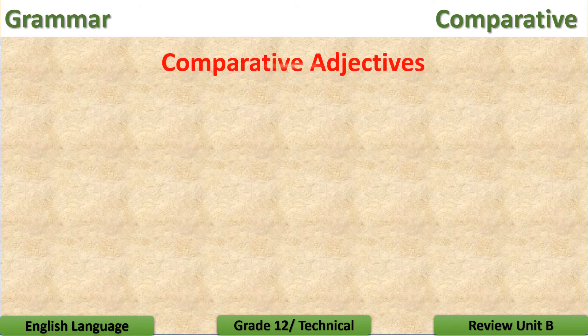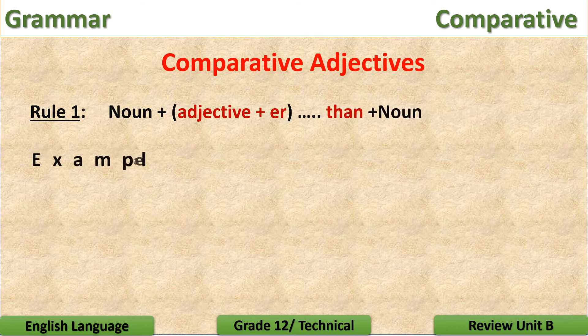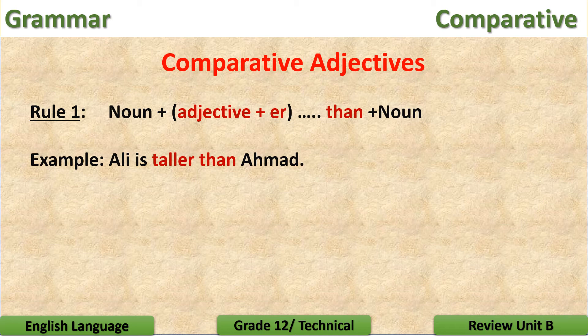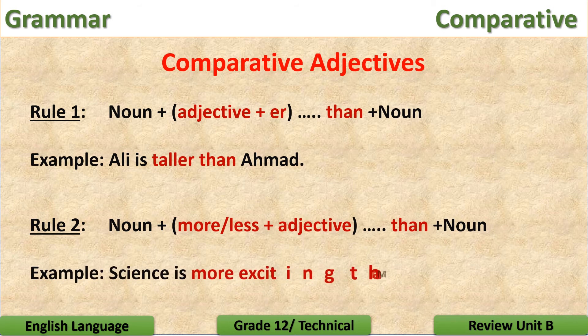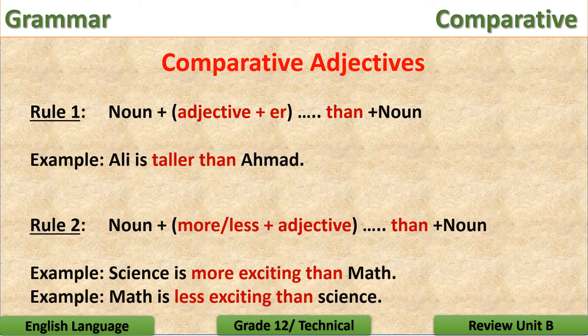In order to use adjectives in comparison, we follow the following rules. Number one: adjective plus ER — but the adjective should be made of one or two syllables, a short word. Like: Ali is taller than Ahmed. While in rule number two, if the adjective is a long one made of three or more syllables, we can't add ER — but we add more or less before the adjective. Like: Science is more exciting than math. Or math is less exciting than science.